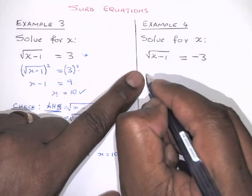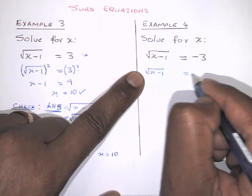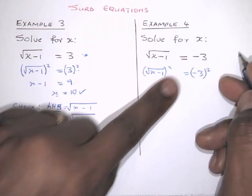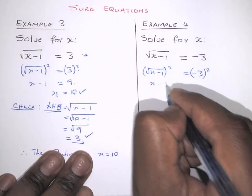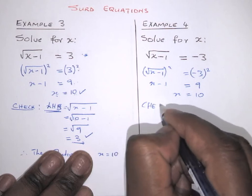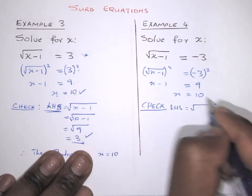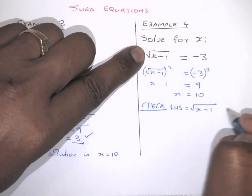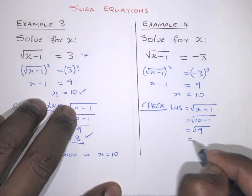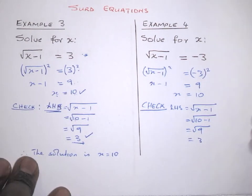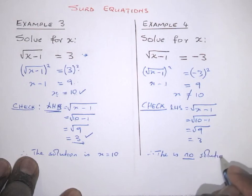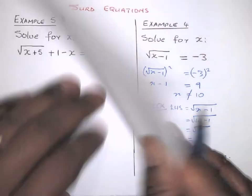For √(x − 1) = −3: even if we square both sides we get x − 1 = 9, so x = 10. But checking: √(10 − 1) = √9 = 3, and 3 ≠ −3. This does not match the right hand side, so there is no solution.